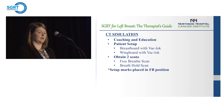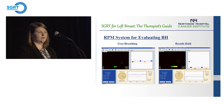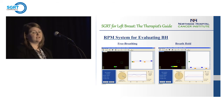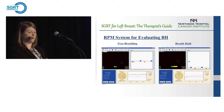We obtain two scans: a free breathe and a breath hold scan, and we place marks on the patient in the free breathe position. We also use our RPM system to evaluate the patients for breath hold in the CT-SIM. We do our free breathe scan first, then set the patient up, let them relax a little, explain the process, and put the box pretty high up on their chest to make sure we're getting a good read on it and can pick up on their breathing.